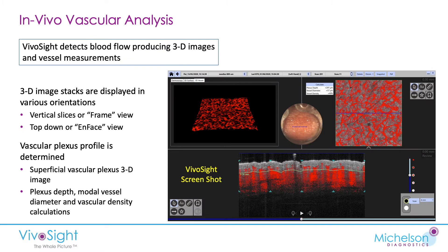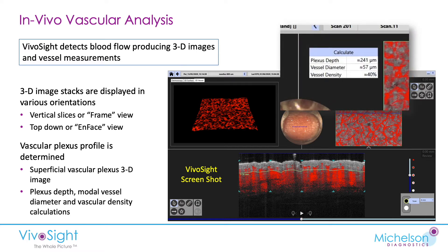VivoSight OCT also has a capability to image blood vessels. This is an actual screenshot of the machine display after capturing an image of some tissue that has had a patch removed and shows some erythema. We can see a map of all the vessels, and importantly we can get measurements of the depth of the active plexus — in this case 241 microns, just under a quarter millimeter down. The most common vessel diameter is 57 microns, and the density is 40%, so quite a lot of tissue is comprised of active vessels at this depth.